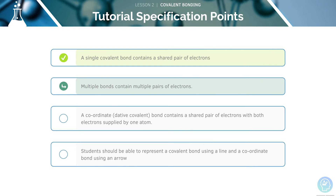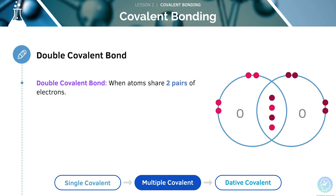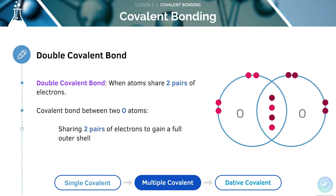Let's move on to our second learning objective, covering the fact that multiple bonds will contain multiple pairs of electrons. Atoms can form multiple covalent bonds as well as single covalent bonds — this is when several pairs of electrons are shared. A multiple covalent bond can be either double or triple. A double covalent bond is when an atom will share two pairs of electrons. For example, the covalent bond between two oxygen atoms involves sharing two pairs of electrons to gain a full outer shell.